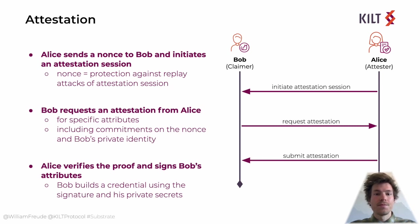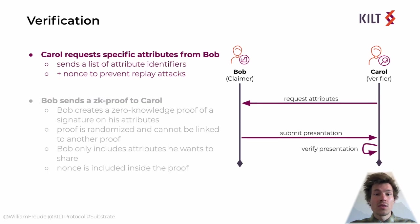Now let's go to the next step, which is the verification. Bob wants to prove to a verifier named Carol that someone she trusts, like Alice, attested him certain attributes and that at the time of the verification this credential has not been revoked. But this proof should be in zero knowledge. This means that Bob does not send the whole credential and only reveals some attributes — so here we have selective disclosure. The rest is proven in zero knowledge. Also, Bob's proof is randomized and cannot be linked to another one, even if the same nonce is used multiple times. Therefore, we also have multi-show unlinkability.